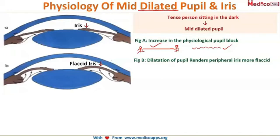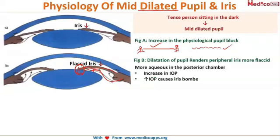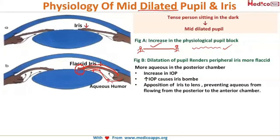The peripheral iris is more flaccid, as you can see in this picture. When it becomes flaccid, this part falls on the lens and comes in contact with it. So when aqueous is secreted, it gets collected in the posterior chamber. The intraocular pressure increases in the posterior chamber, and this condition is called iris bombé — when the iris moves forward because of collection of aqueous humor in the posterior chamber. This is the apposition of the iris to the lens, preventing aqueous from flowing from the posterior to the anterior chamber, causing iris bombé.